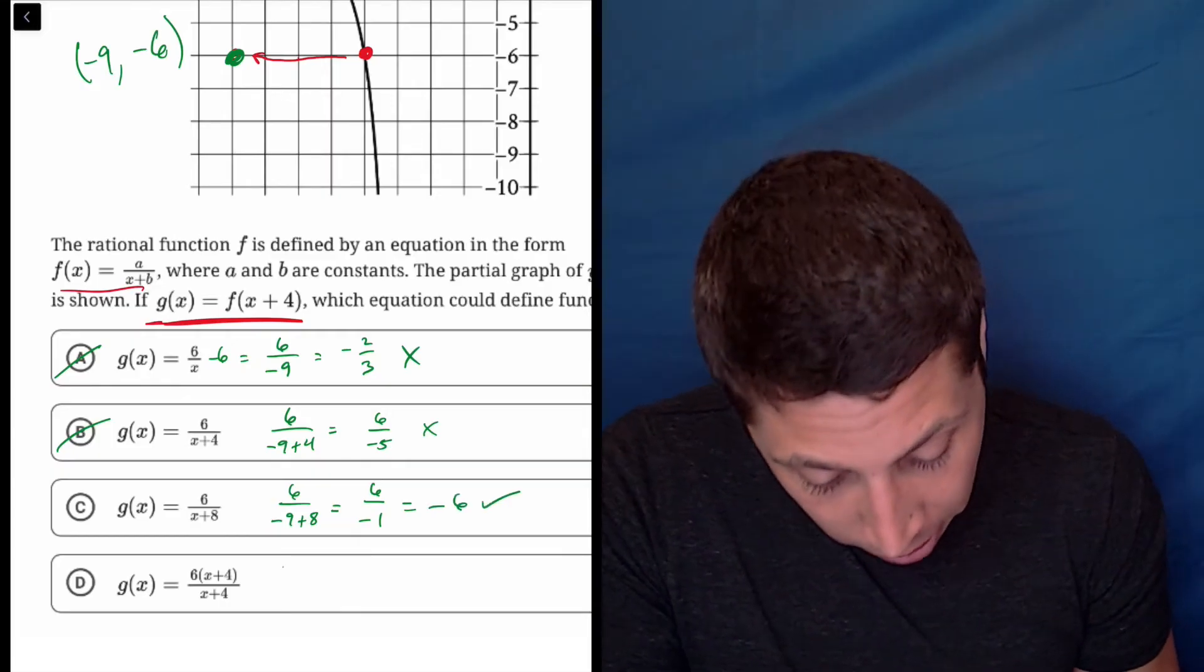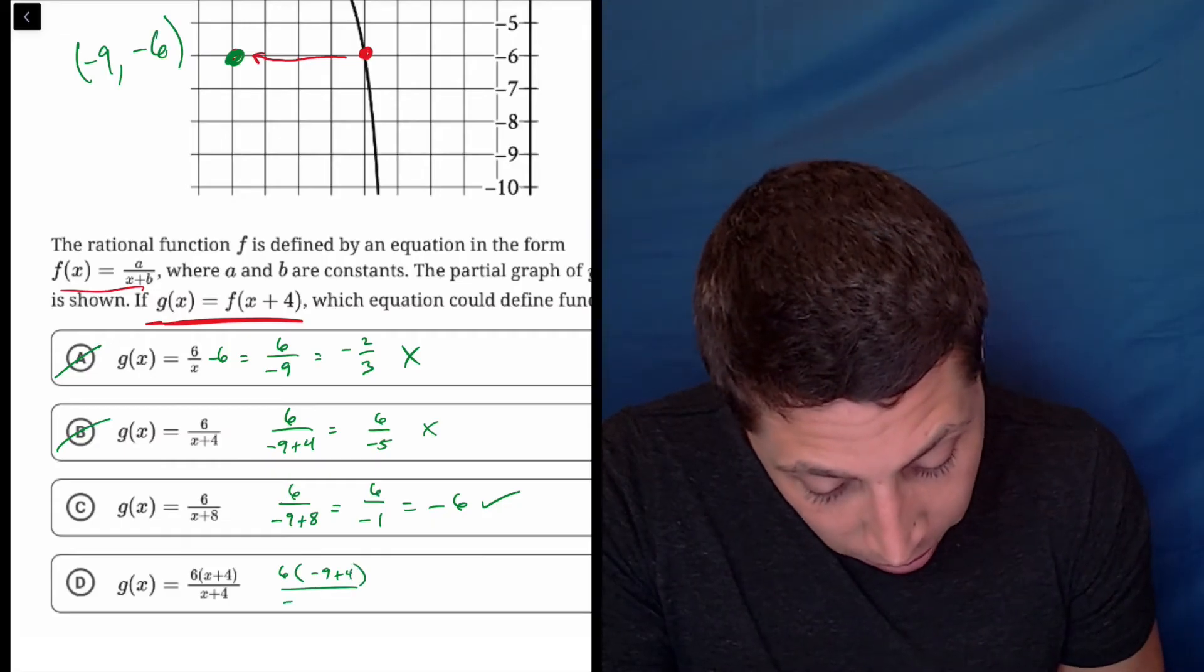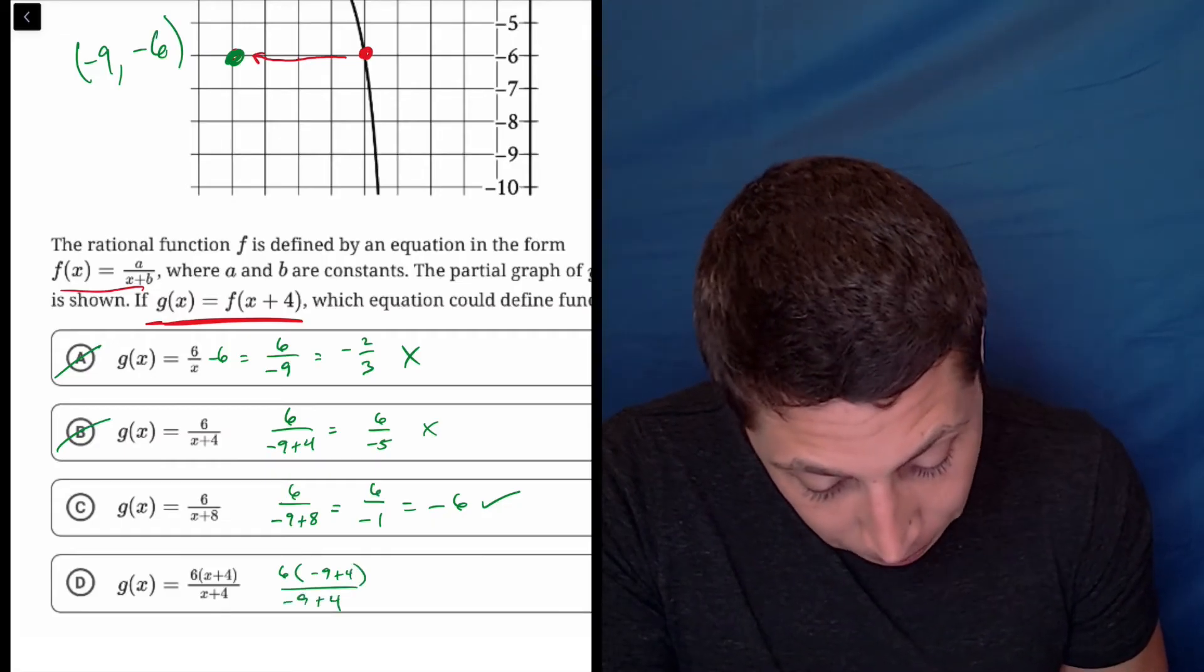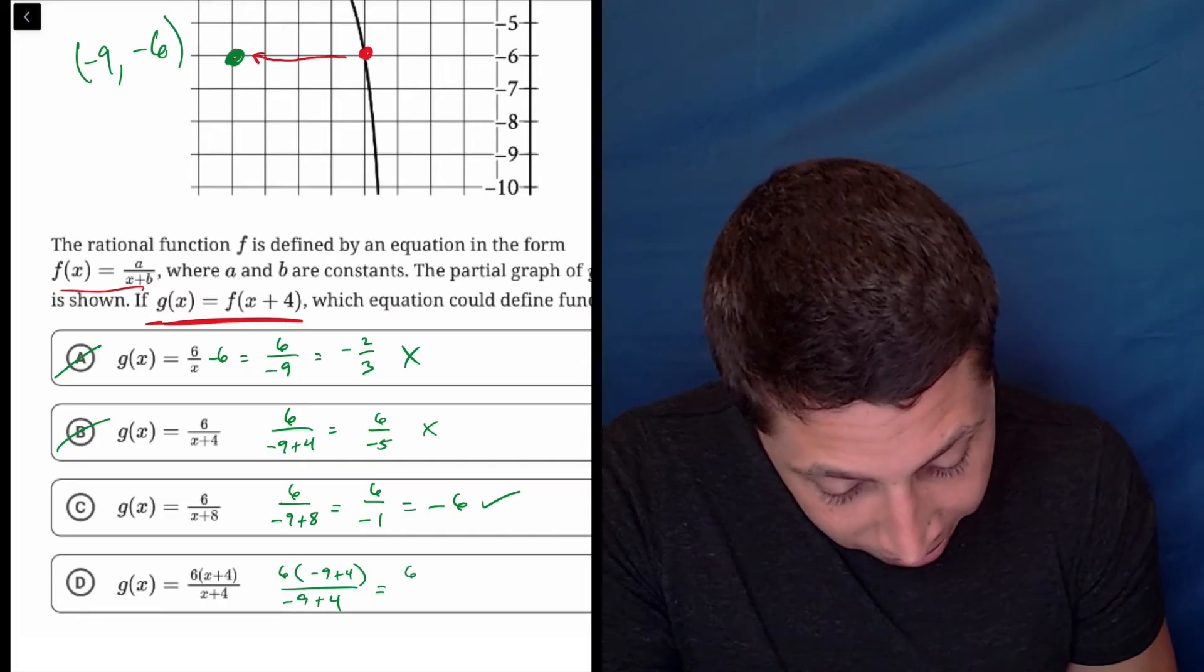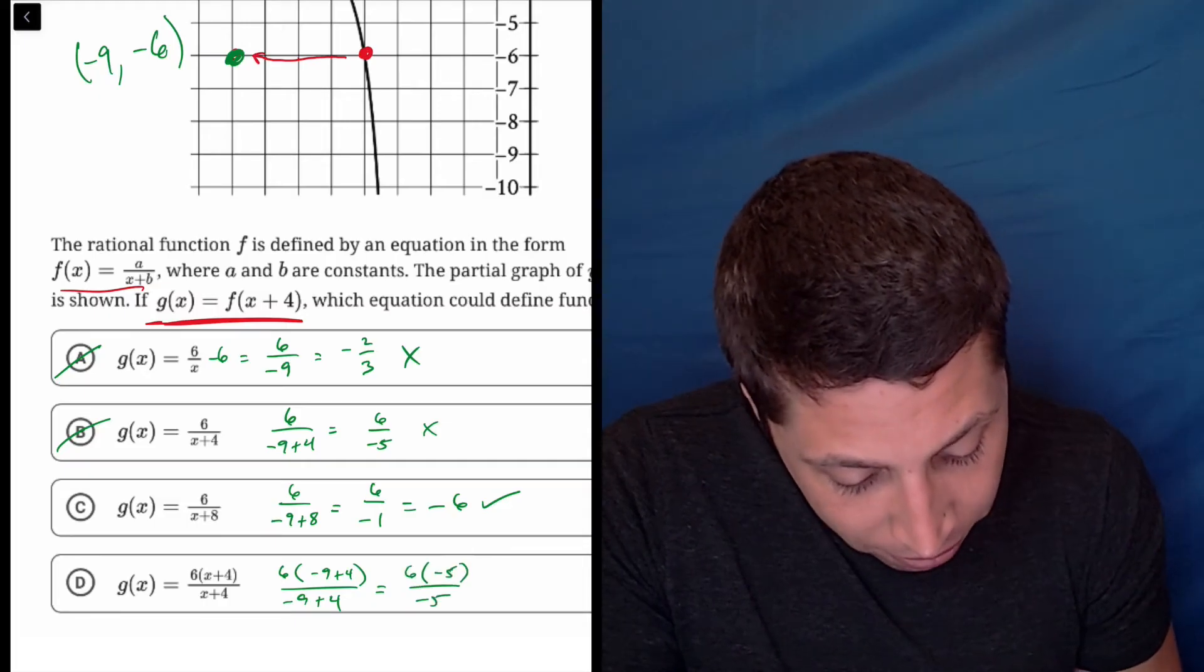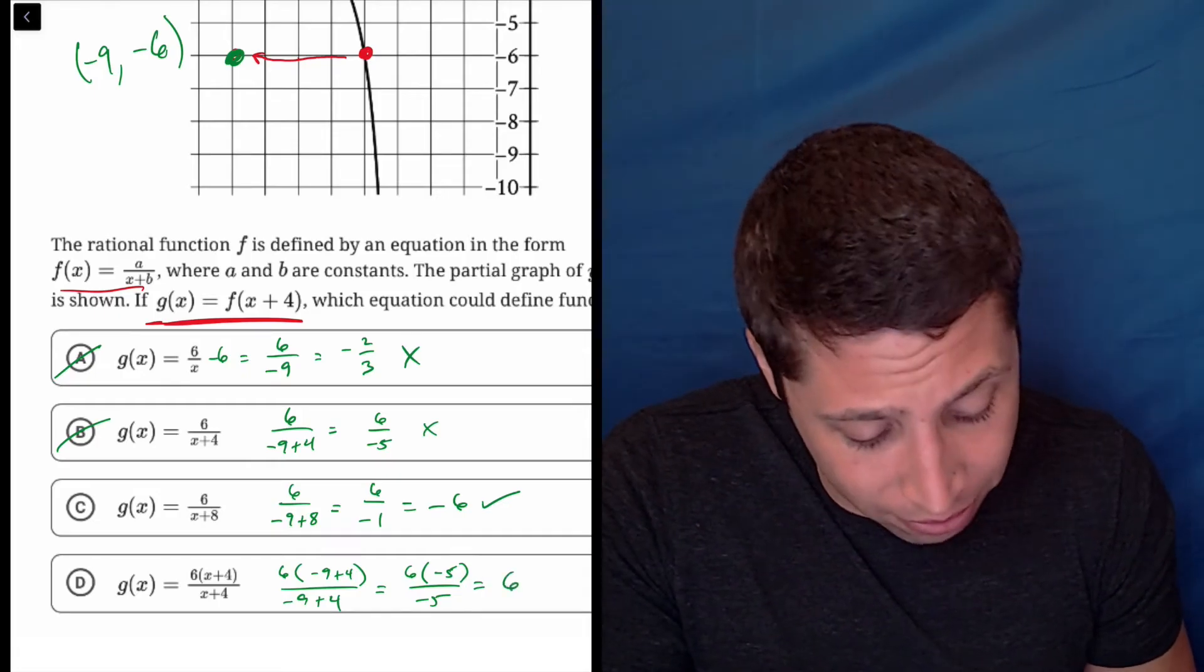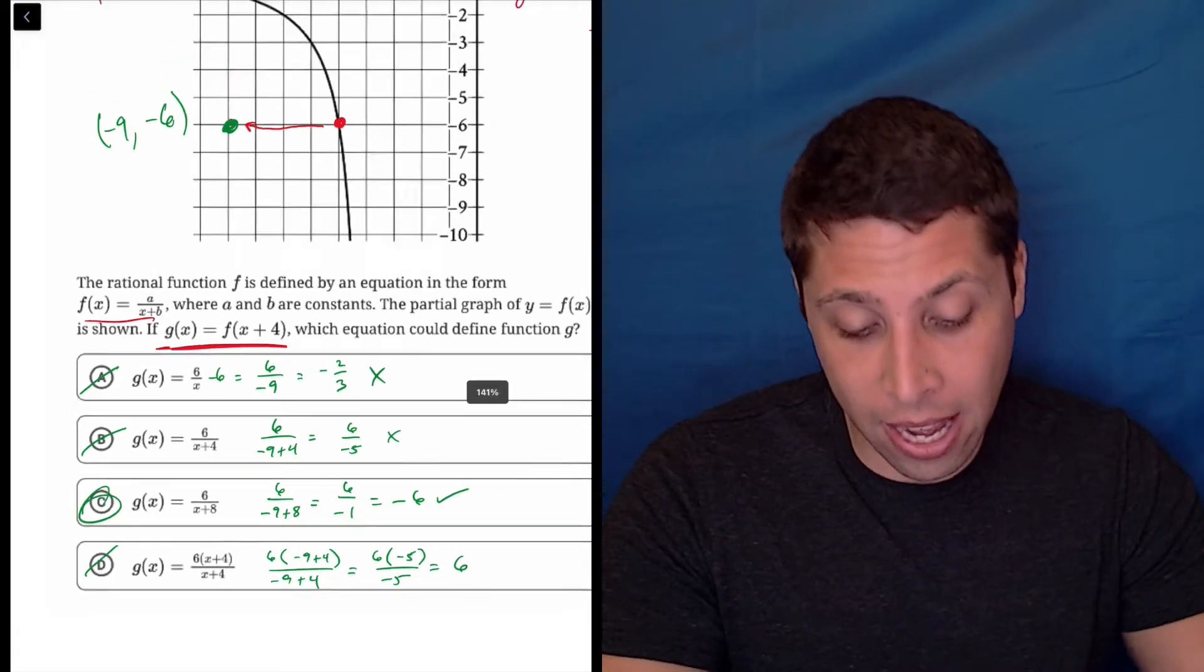We've got to try D. Let's make sure. Six times negative nine plus four over negative nine plus four. Well, that's not going to change anything. So that's six times negative five over negative five. We can multiply out or we can just reduce the negative five. This is just positive six. That doesn't work either. So C is the answer here.